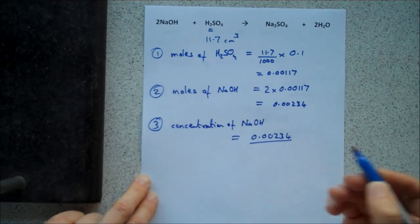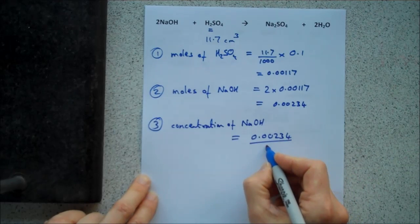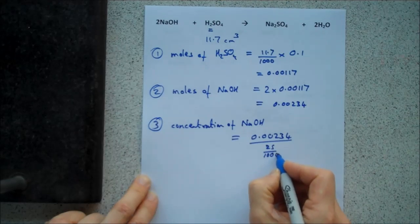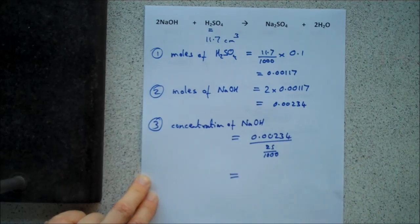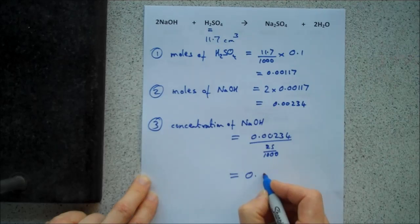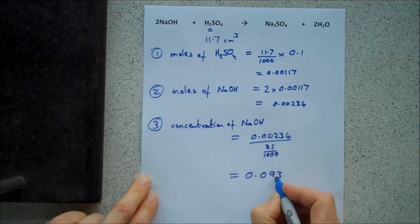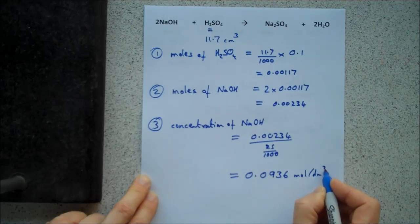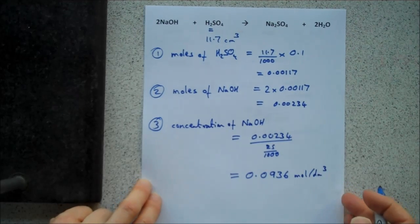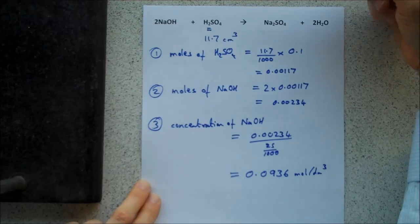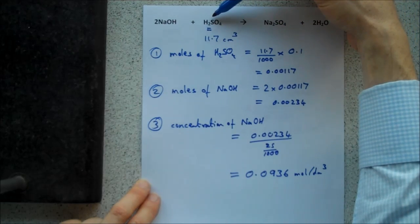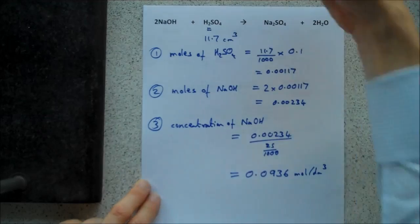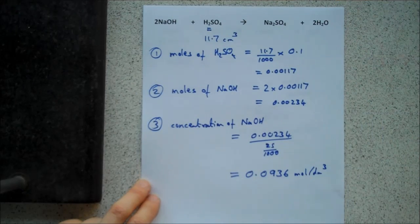The volume, let's say there was 25 centimetres cubed still, 25 over 1,000, which of course is 0.025. You put that into your calculator and you'll get 0.0936 moles per decimetre cubed. So, the only difference was the fact that we're using an acid that has twice as many H plus ions in it, so it reacts with twice as many moles of sodium hydroxide.